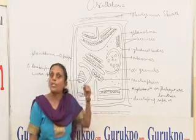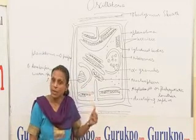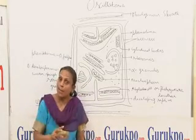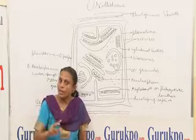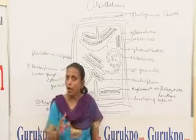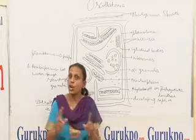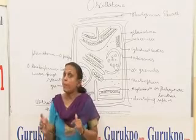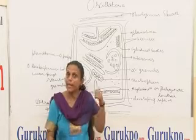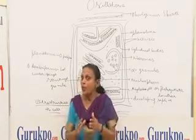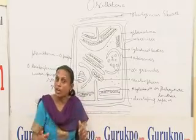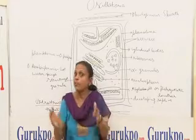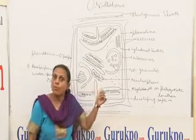Now I move towards the movements shown by Oscillatoria. There are two types: gliding movements and oscillatory movement. In oscillatory movement, the trichome moves to and fro like the pendulum of a watch. In gliding movement, the trichome shows rhythmic contractions on a solid substratum without the help of any visible organ.